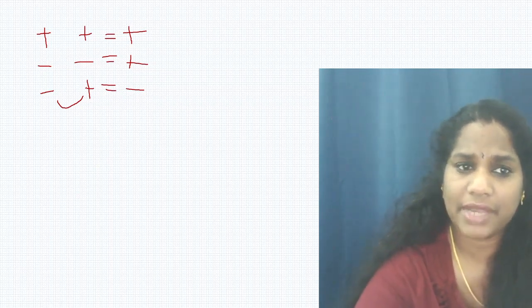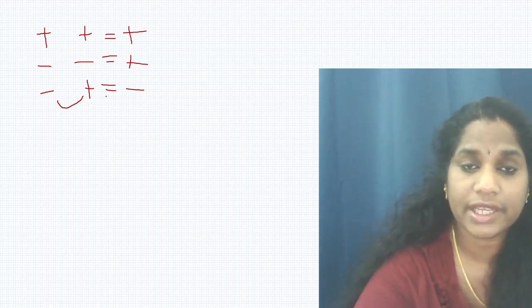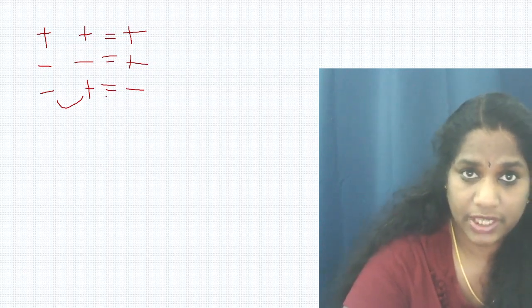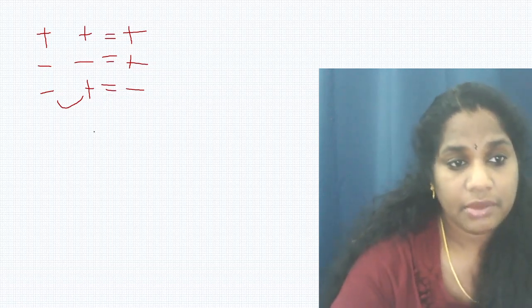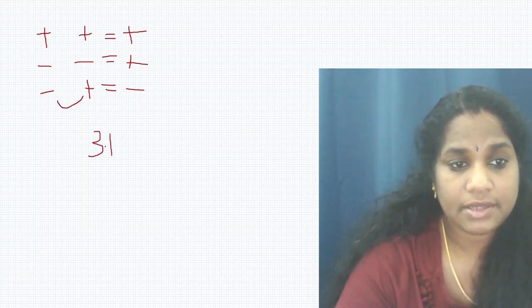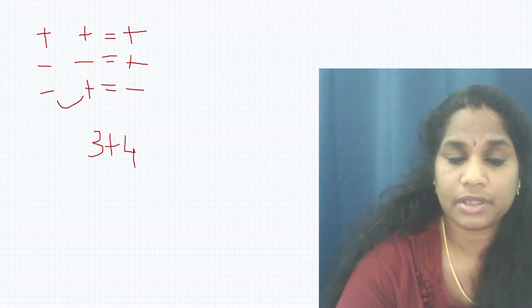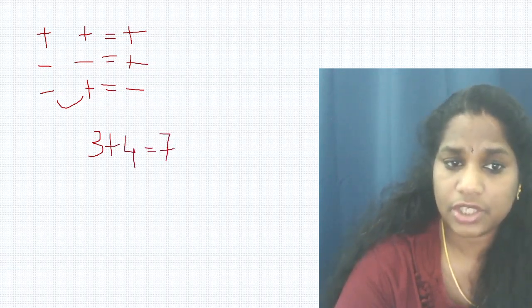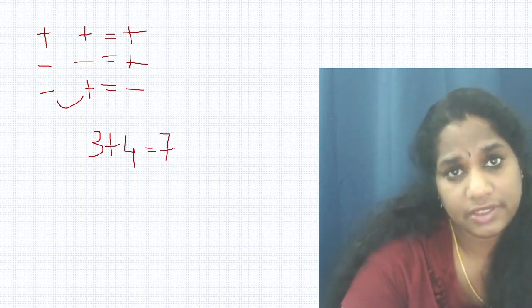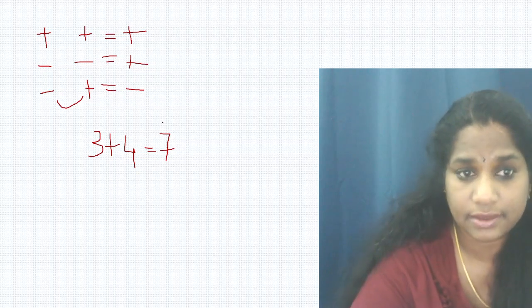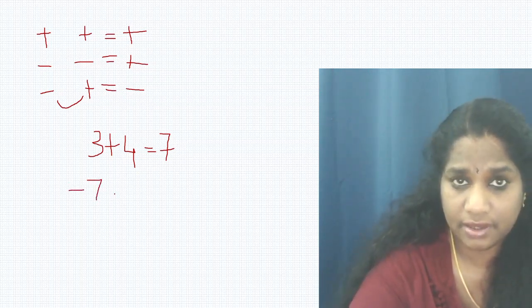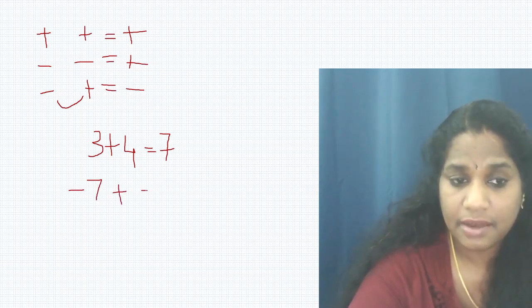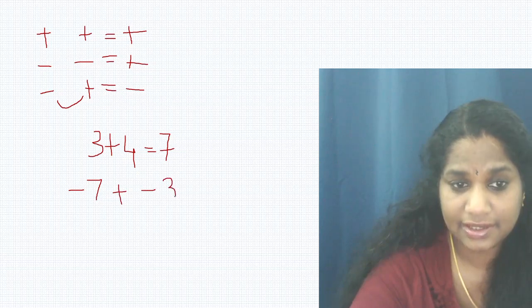Let us see some examples, as this is a very important concept useful in many coming chapters. Example one: 3 + 4 = 7. No need to put a sign because positive is the default — you don't have to write a positive sign. Example two: minus 7 plus (minus 3), written in brackets to avoid confusion.